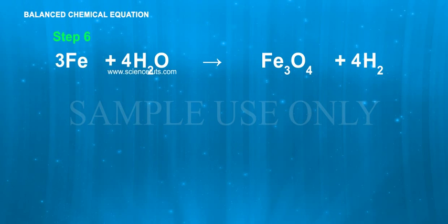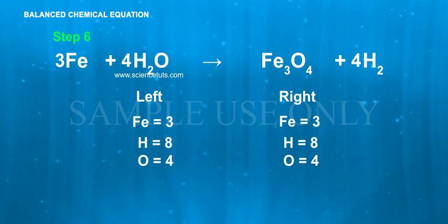Step 6. Count atoms. Count atoms of each element on both sides of equation. Left: Fe equals 3, H equals 8, O equals 4. Right: Fe equals 3, H equals 8, O equals 4.